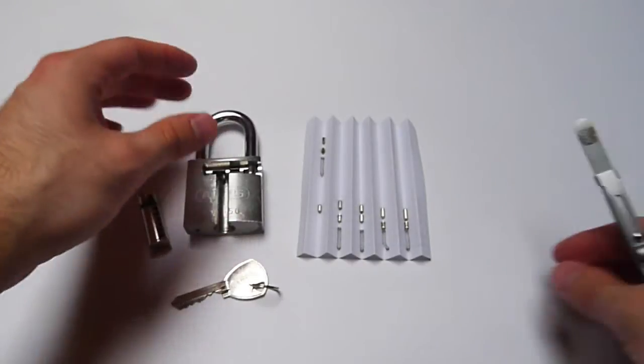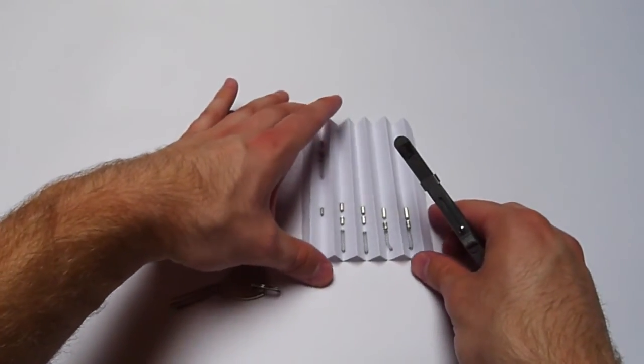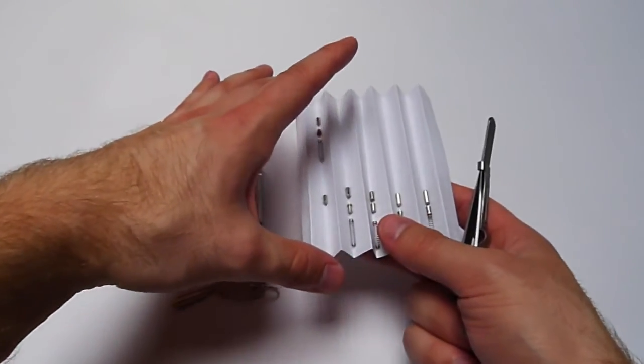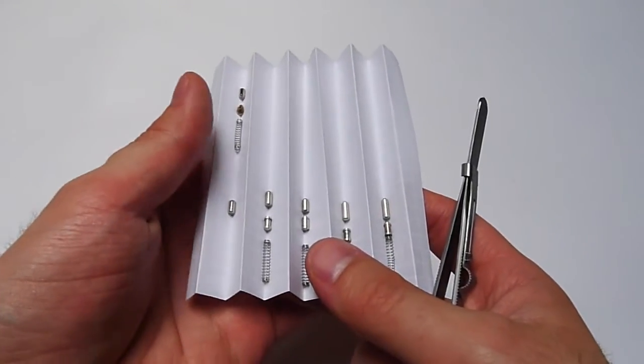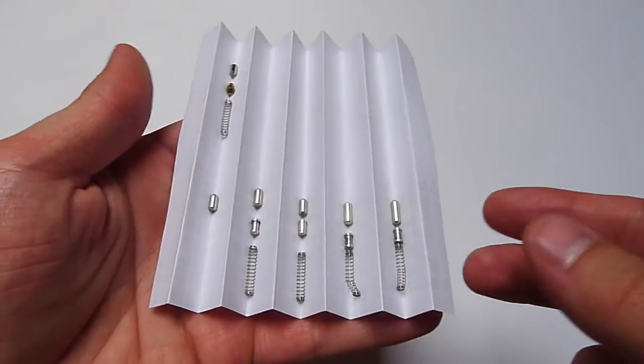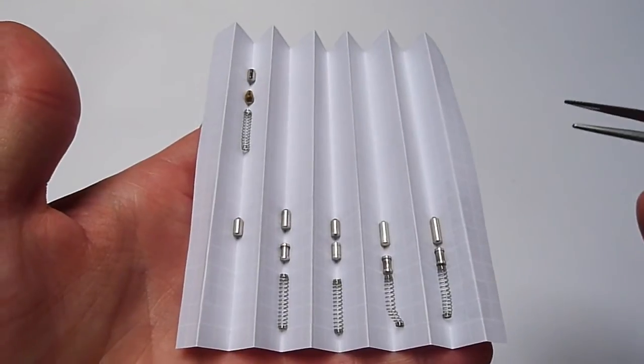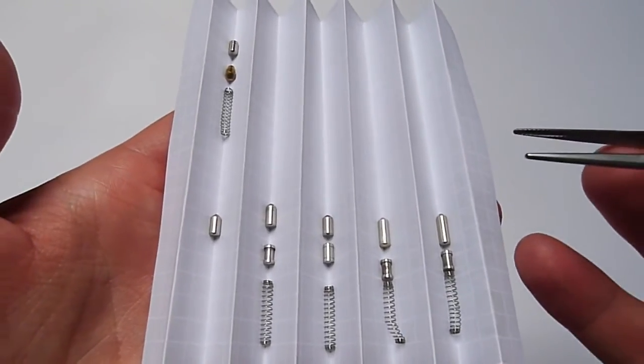But let's go on and take a look at the pins of the Titalium padlock. They are all made out of brass and plated with chrome, and all these springs are made out of magnetic steel and probably also plated.